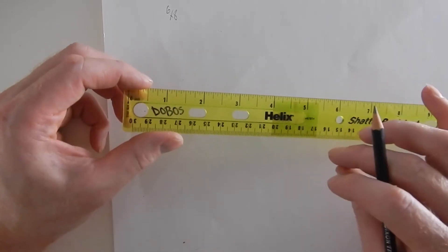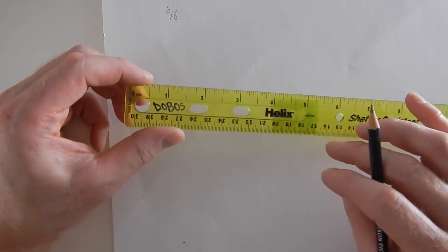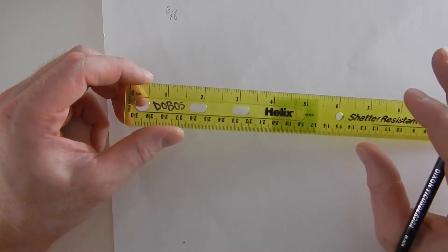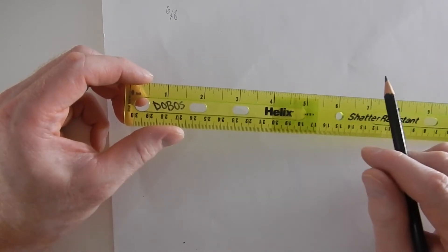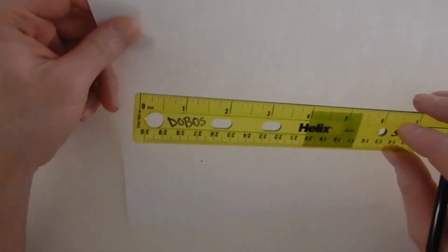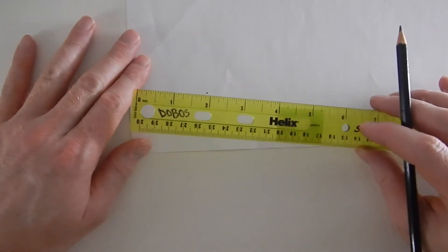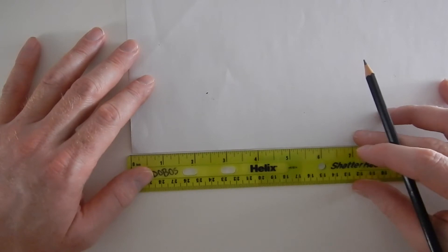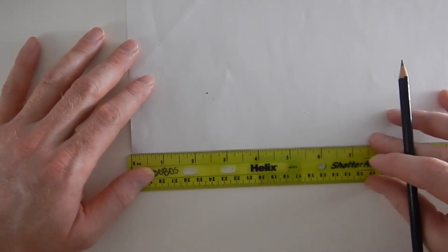Remember the smaller your grid, the more detail and the more accurate your final drawing will be. But the smaller your grid, the harder it will be to do the gridding part. I'm going to keep this simple. It's the same idea. I'm just going to be using one inch increments on this sheet of paper.